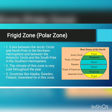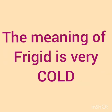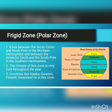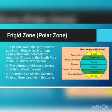The third and last heat zone of the earth is the frigid zone. This zone is also known as the polar zone because it lies near the poles. The meaning of frigid is very cold, so we call it the frigid zone. This zone lies between the Arctic Circle and the North Pole in the Northern Hemisphere, and between the Antarctic Circle and the South Pole in the Southern Hemisphere. The climate of this zone is very cold throughout the year as this zone gets less amount of sun rays.